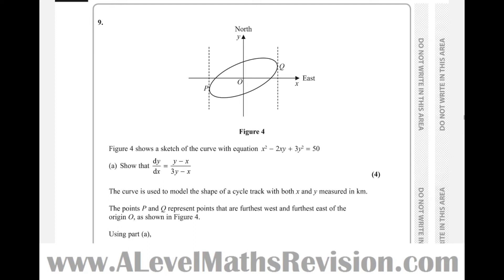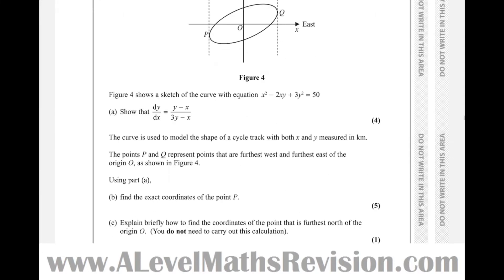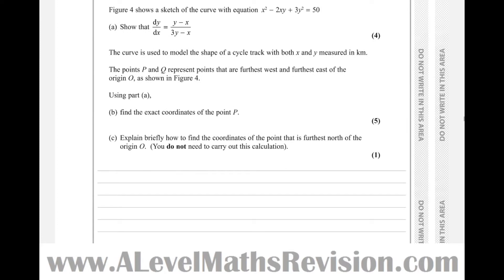Question 9: Figure 4 shows a sketch of the curve with equation x squared minus 2xy plus 3y squared equals 50. Show that dy by dx equals that. This is an implicit differentiation question, so let's get straight to it. First, copy out the question: x squared minus 2xy plus 3y squared equals 50.